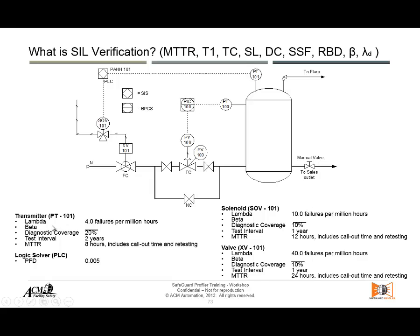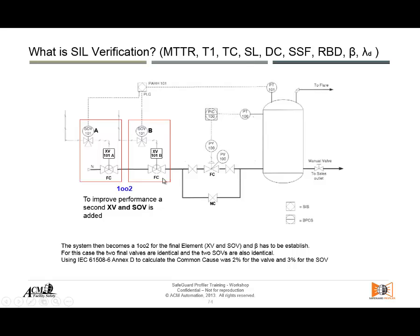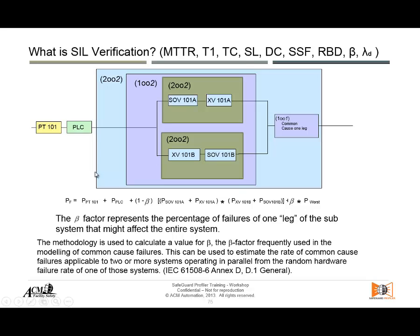Here is an example showing no redundancy versus redundancy on the final element. Remember: solenoid and valve are in a two-out-of-two configuration — both must work. Between set A and set B, as long as one set works, that is a one-out-of-two between the two sets of two-out-of-two solenoid-and-valve combinations. In Safeguard Profiler, if the components are different, we have to build this architecture inside the tool.